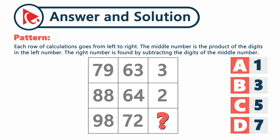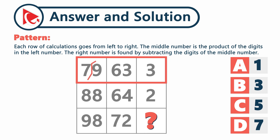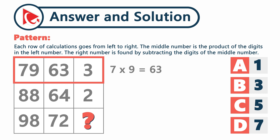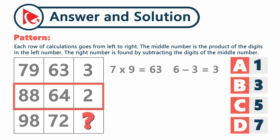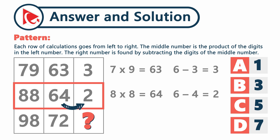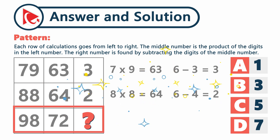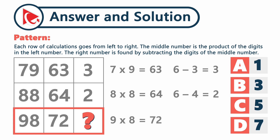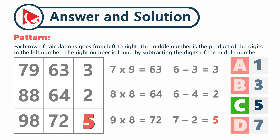Let's look at the example. The first row has numbers 79, 63, and 3. The first number consists of digits 7 and 9. 7 multiplied by 9 equals 63. And 6 minus 3 equals 3. Let's verify the pattern with the middle row: 8 multiplied by 8 equals 64, and 6 minus 4 equals 2. Now it's the magic time to calculate the missing number. 9 multiplied by 8 equals 72, and 7 minus 2 equals 5. So the correct answer here is choice C: 5.